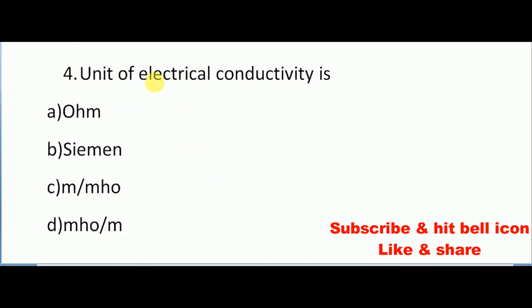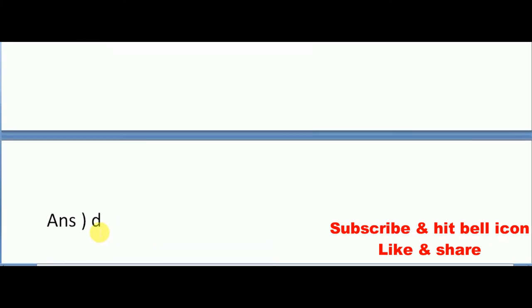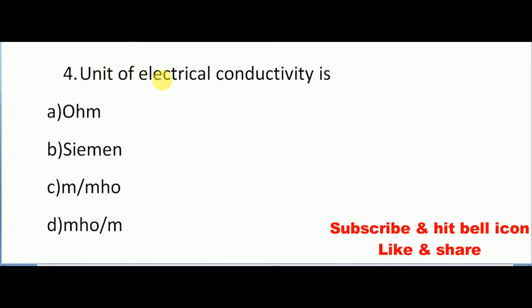Coming to the next question, unit of electrical conductivity is dash. What is the unit of electrical conductivity? Options are ohm, siemens, M by mho, mho by M. Correct answer is mho by M. Option D is the correct answer.